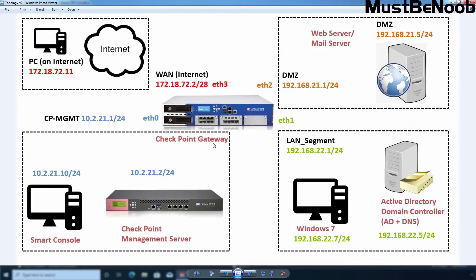As you can see, I have the DMZ segment with the network 192.168.21.0/24. This is our Windows Virtual Machine — I have installed and configured the IIS service on this virtual machine. So basically, this is our internal web server which I have placed in the DMZ area.